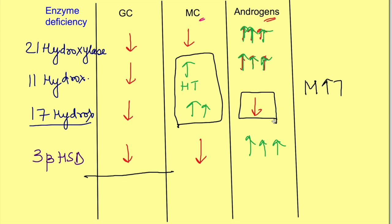That was about congenital adrenal hyperplasia. Adrenal hyperplasia occurs because of increase in ACTH. The clinical features depend on the increase or decrease in various types of hormones. Thanks for watching — if you liked it, press the like button, share the video, and subscribe to the channel Physiology Open.